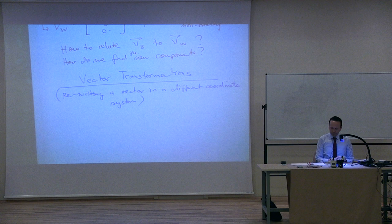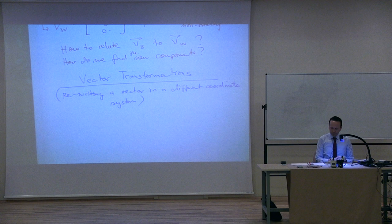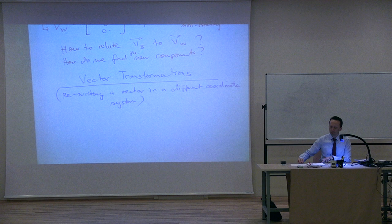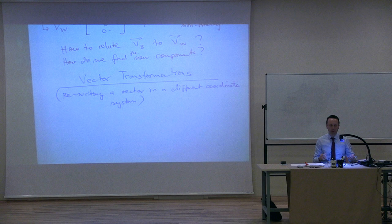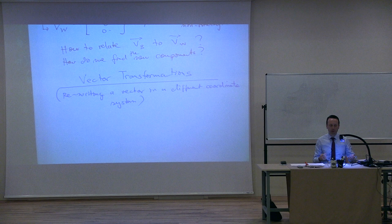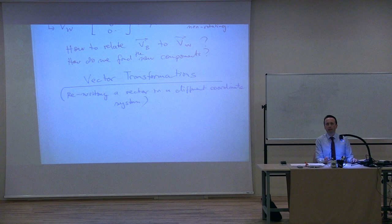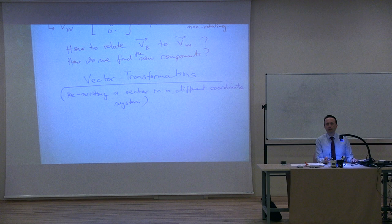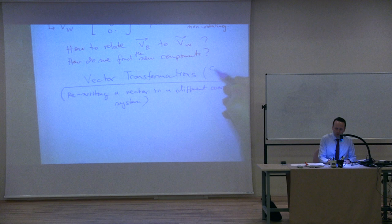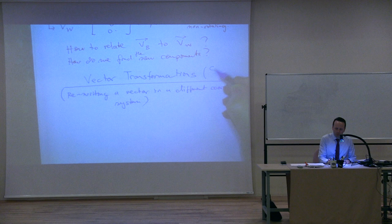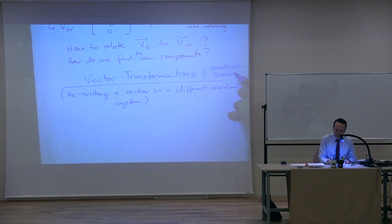What we are going to do today is something you might have seen before, but I'm quickly going to go through the simple 2D part and jump into the 3D part, which is really important for us. The topic today is vector transformations — or, as I prefer to call it, coordinate transformations. 'Vector transformations' kind of implies you're transforming the vector, but that's not what we're doing. We are transforming the representation of a vector in another coordinate system. Please note: coordinate transformations.